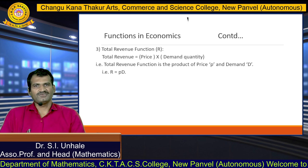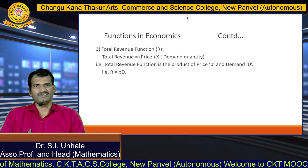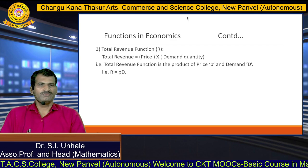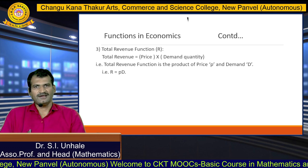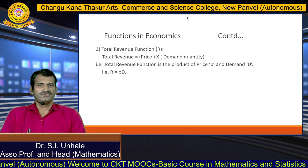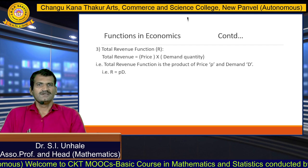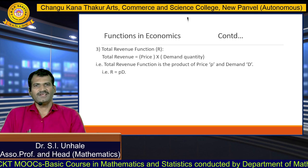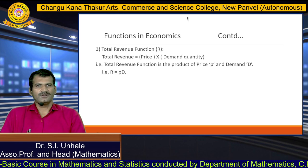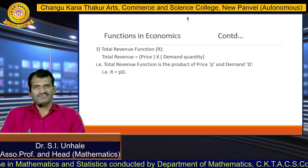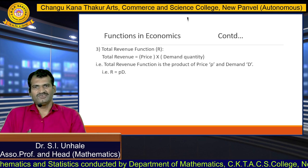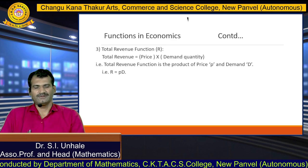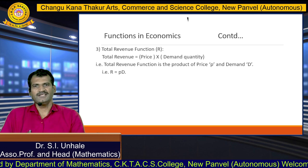The third function from economics is the total revenue function — total revenue due to sale. Total revenue is denoted by R. Total revenue is defined as the product of price and demand quantity. So the total revenue function is price into demand. If total revenue is denoted by R, price is p, and demand is d, then the total revenue function is defined as R equals p times d.